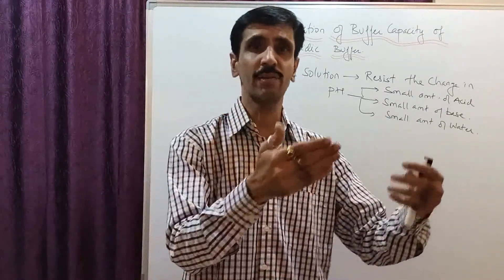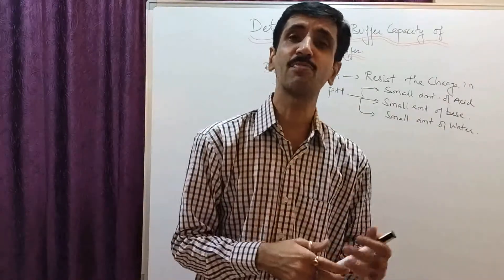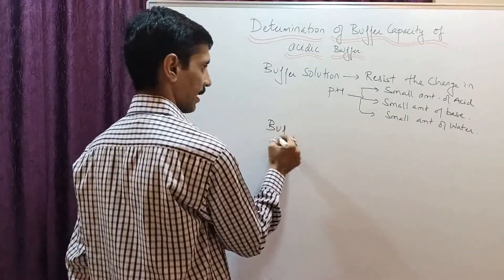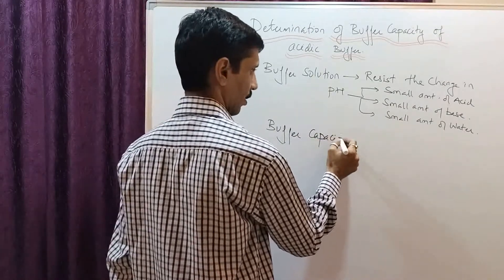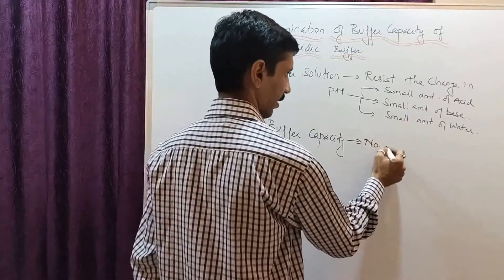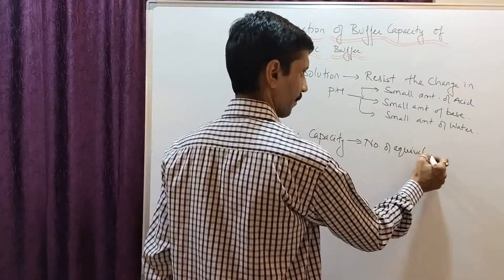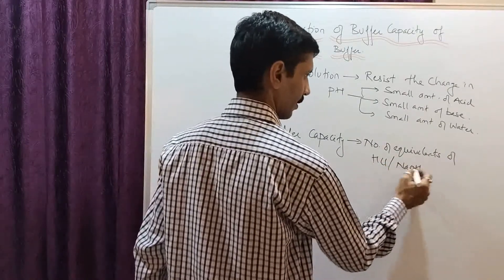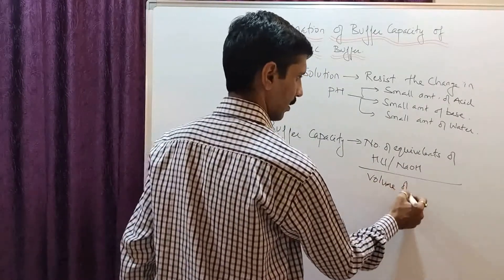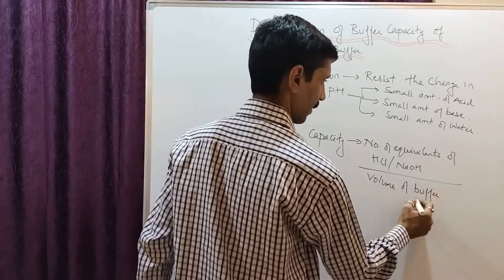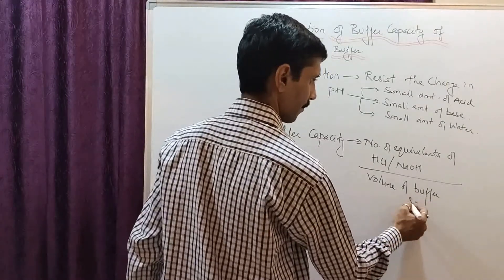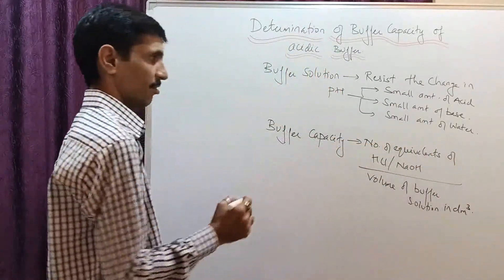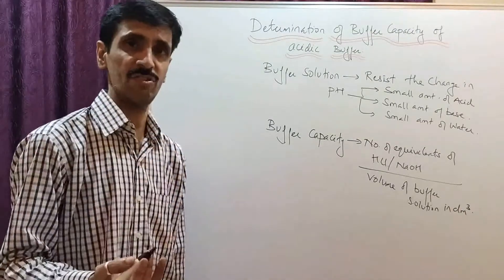That is why we now define a new concept called buffer capacity. Buffer capacity is defined as the number of equivalents of either HCl or NaOH divided by the volume of the buffer solution, and it is expressed in dmq (dm⁻³).